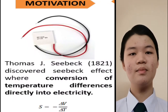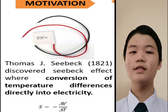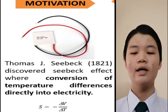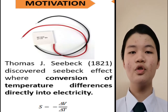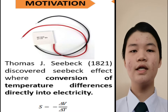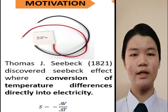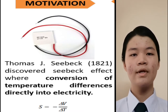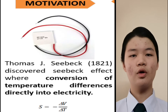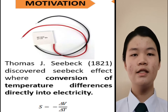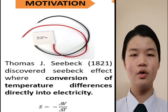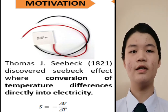Motivation: Thomas J. Seebeck, in 1821, discovered the Seebeck effect — the conversion of temperature differences directly into electricity. The formula is: Seebeck coefficient equals negative delta V over delta T.